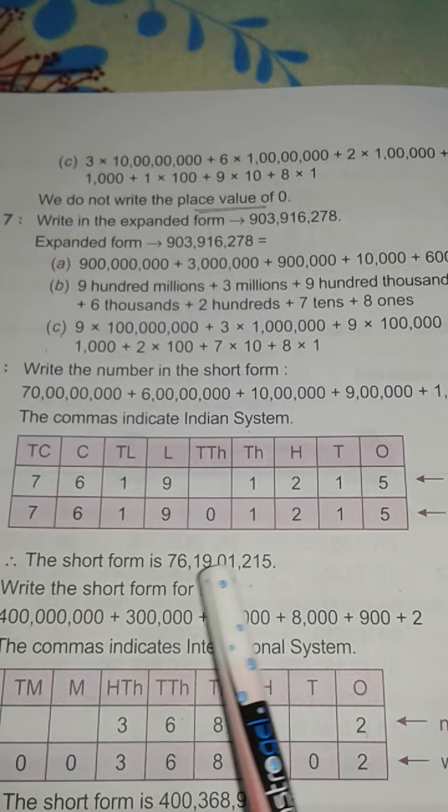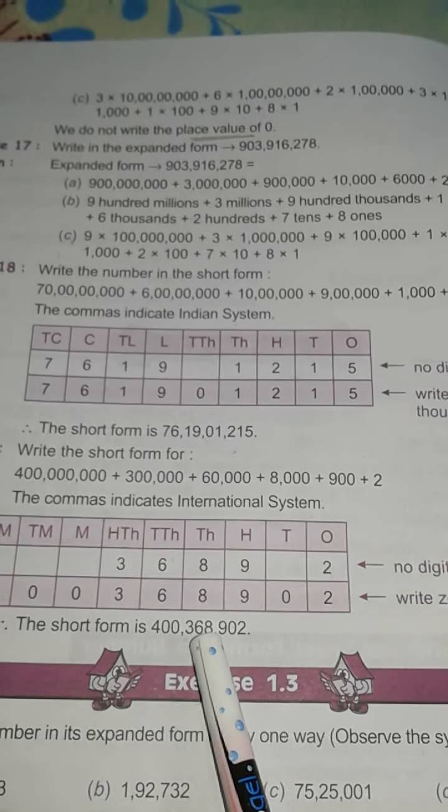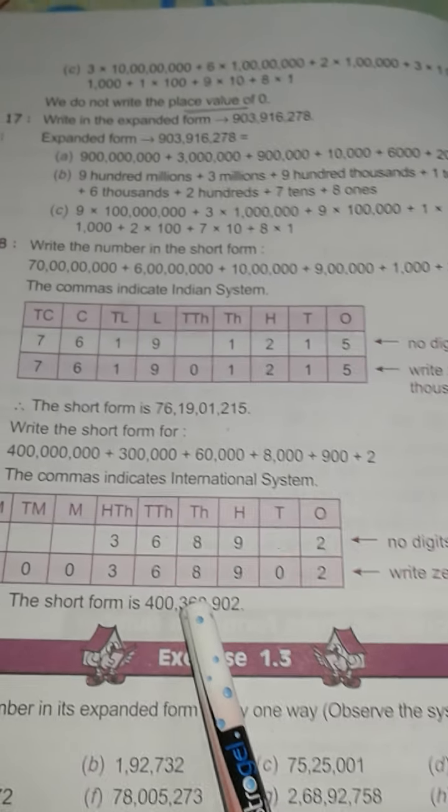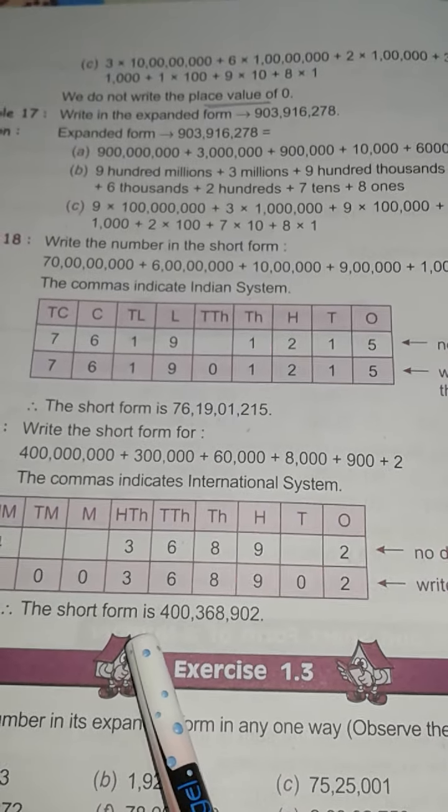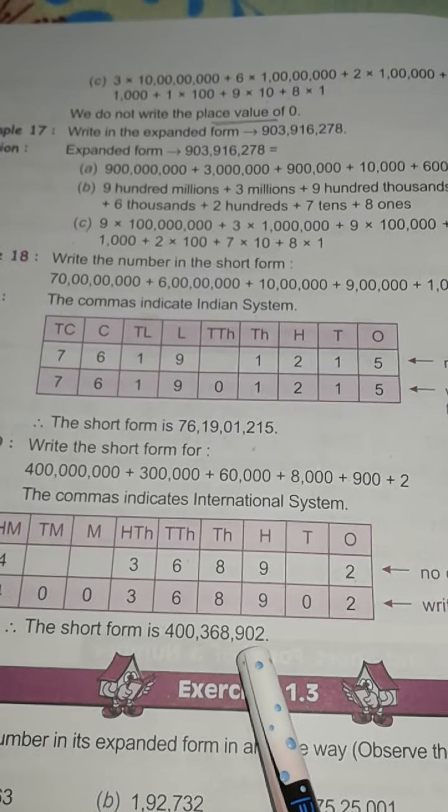Then in international system, how you read: 400 million, 368 thousand, 902. Here also, children, put the commas properly. Then comes to exercise 1.3.